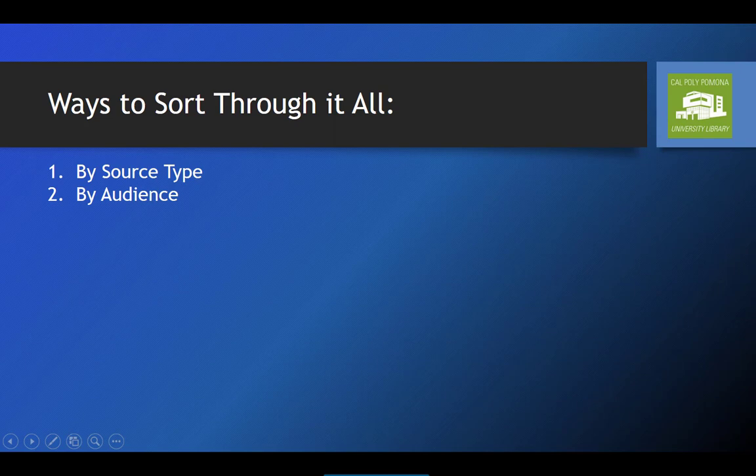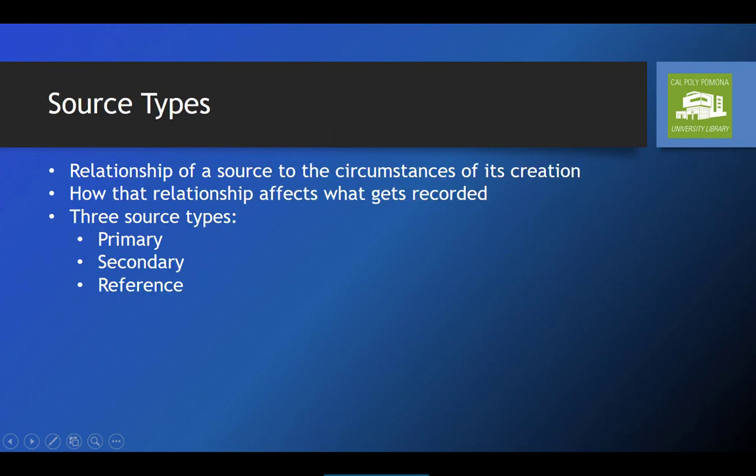There are a lot of different ways to sort and classify information, and we're not going to attempt to go through them all here. Instead, we're going to focus on two methods: the type of source, and the audience it's directed towards. When we talk about source types, we're talking about the relationship of a source to the circumstances of its creation, and how that affects what gets recorded. We break information up into three types of sources: primary, secondary, and reference sources.